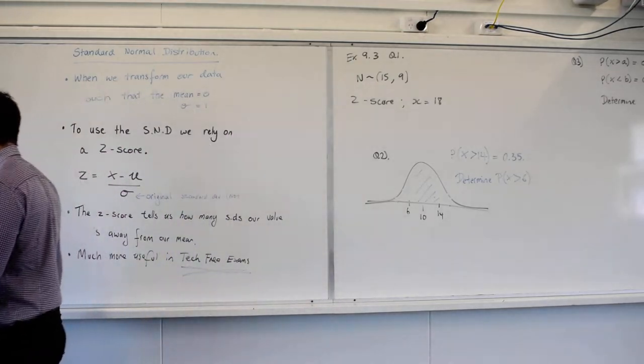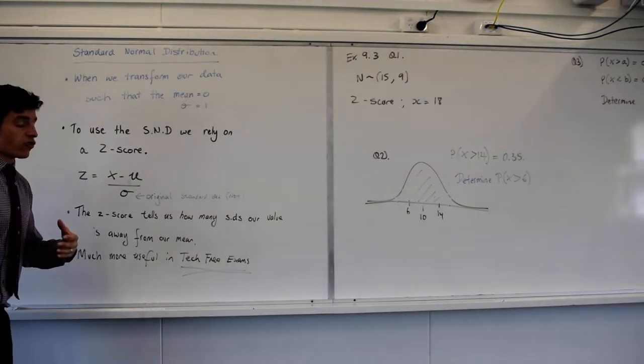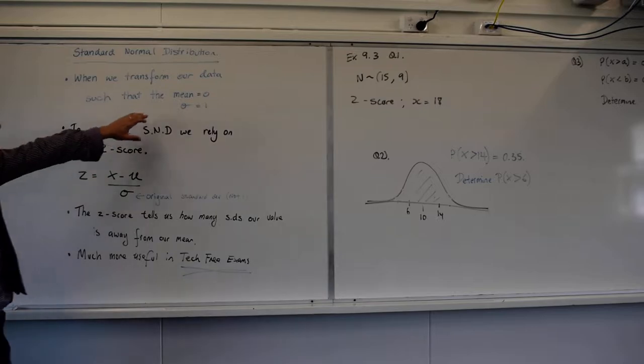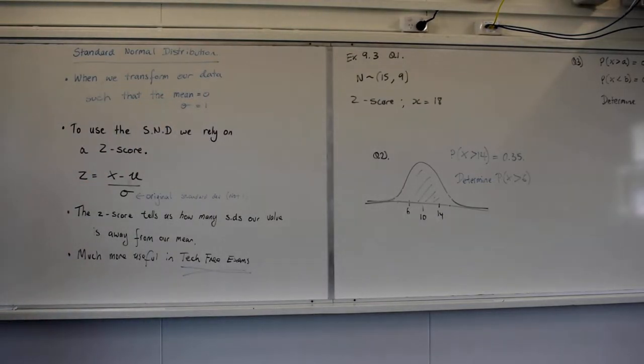The problem with the normal distribution is it's very hard to deal with without technology. So to cope with that, we transform our data using the standard normal distribution. It's still a normal distribution. All we're doing is shifting our mean, manipulating our mean and our standard deviation to make the numbers much finer and make it make more sense.